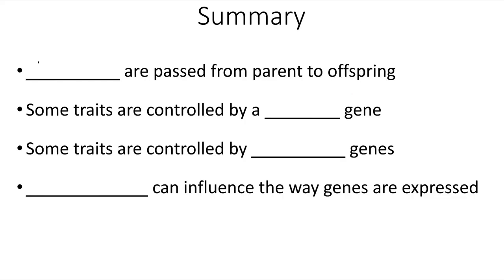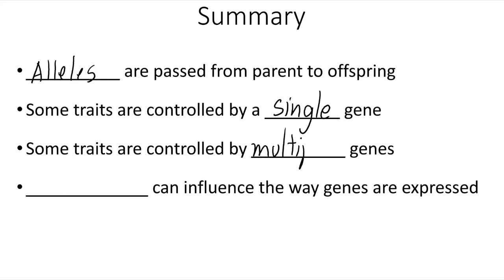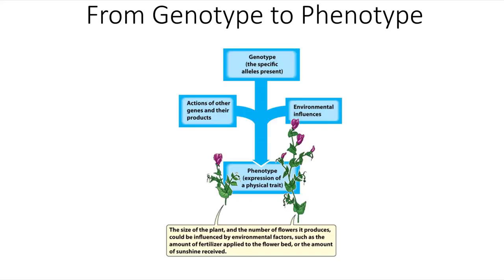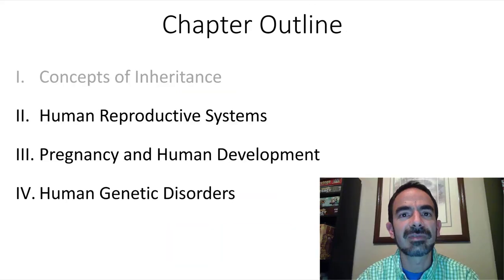In summary, alleles are passed from parents to offspring. Some traits are controlled by a single gene, and some traits are controlled by multiple genes. The environment can also influence the ways in which genes are expressed. The phenotype of an organism — their physical appearance — is dependent on their genotype, but also other environmental influences. In the next video, we'll be talking about the organ systems that allow for human reproduction.